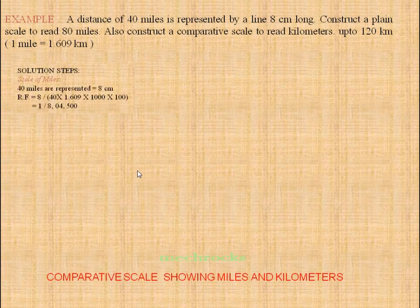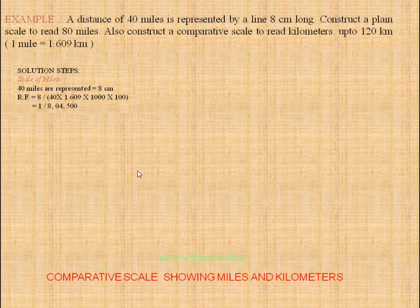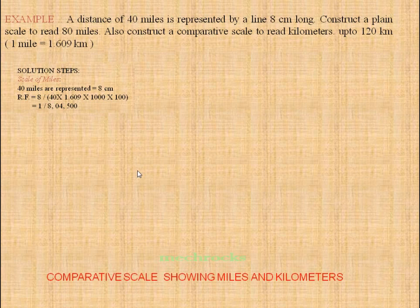First we see the mile scale. Given that 40 miles are represented by an 8 cm line, from this we have to find the RF — the representative factor. RF equals drawing length divided by actual length. The drawing length is 8 cm. The actual length is 40 miles, which we convert into cm: 40 × 1.609 × 1000 × 100. So RF = 8 ÷ (40 × 1.609 × 1000 × 100), giving us 1/84,500.